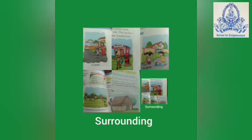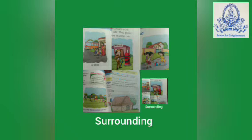What is surrounding? Do you know what is the surrounding? Everything around us like schools, garden, roads, playgrounds, houses, plants, animals is part of our surrounding. The air, water, and soil around us is also part of our surrounding.